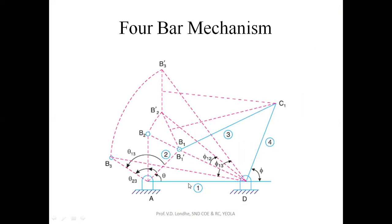For the given problem, we will know the fixed link length and the length of the crank. This synthesis process is done for three positions of the crank. Theta is the first position of the crank, theta one-two is the second position, theta two-three is the angle between second and third positions, and theta one-three is the third position. The output angle made by the rocker link with respect to the fixed link is denoted by phi.